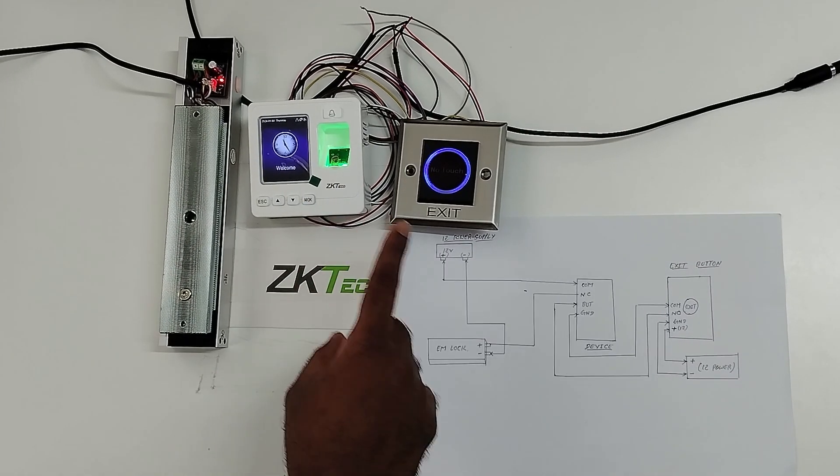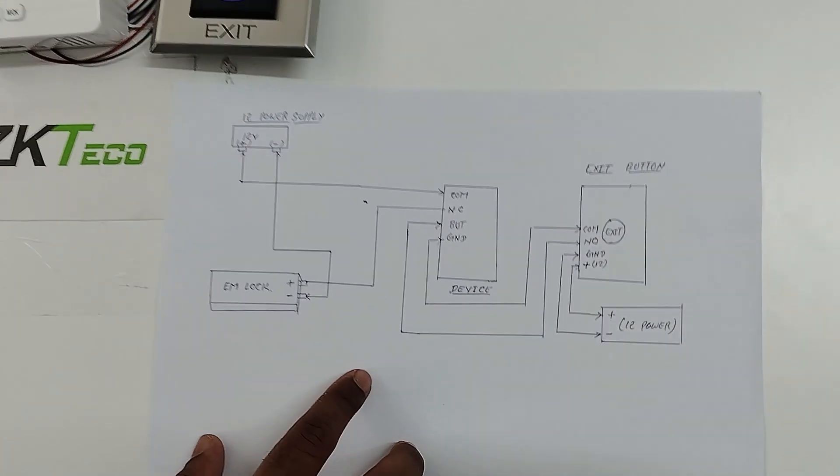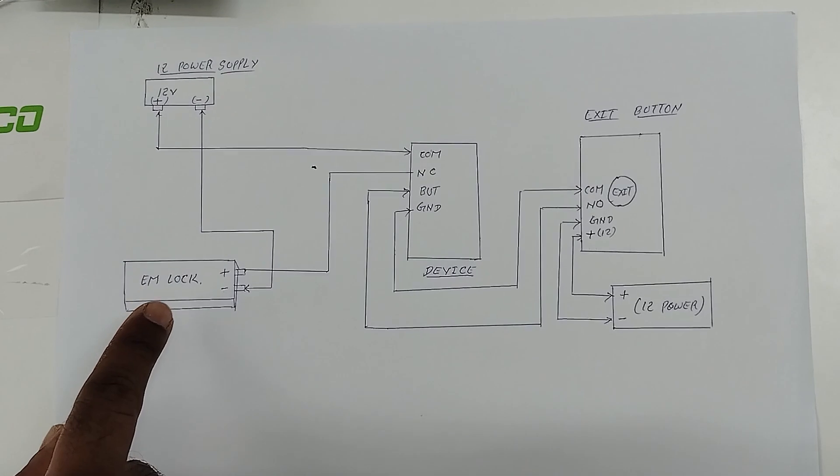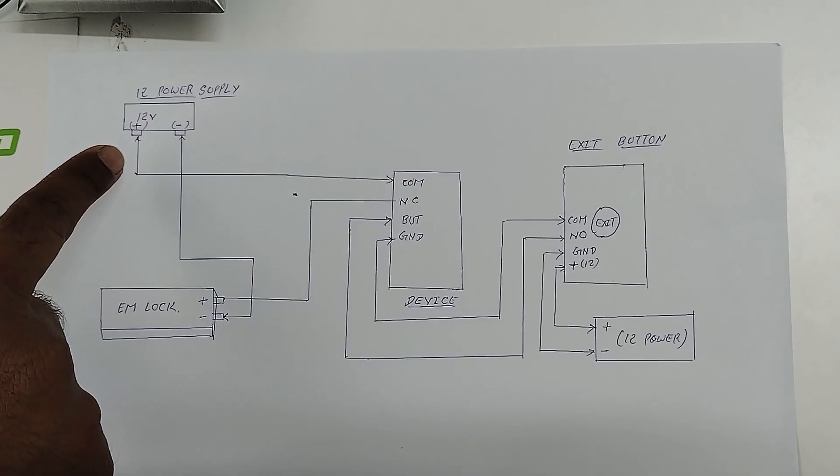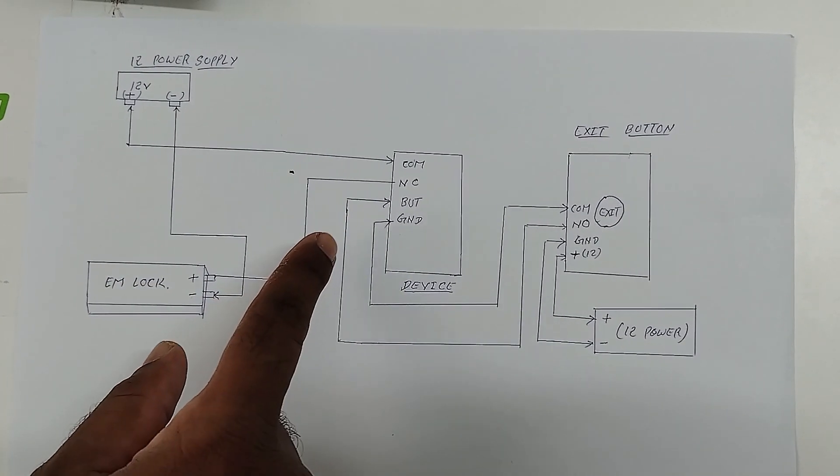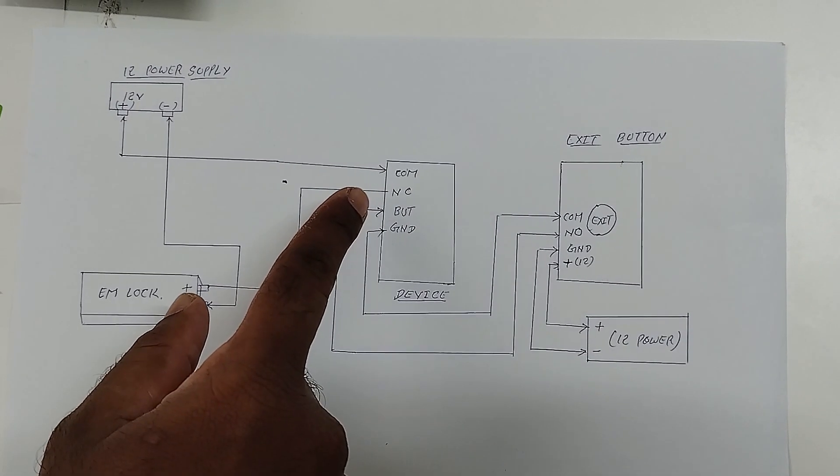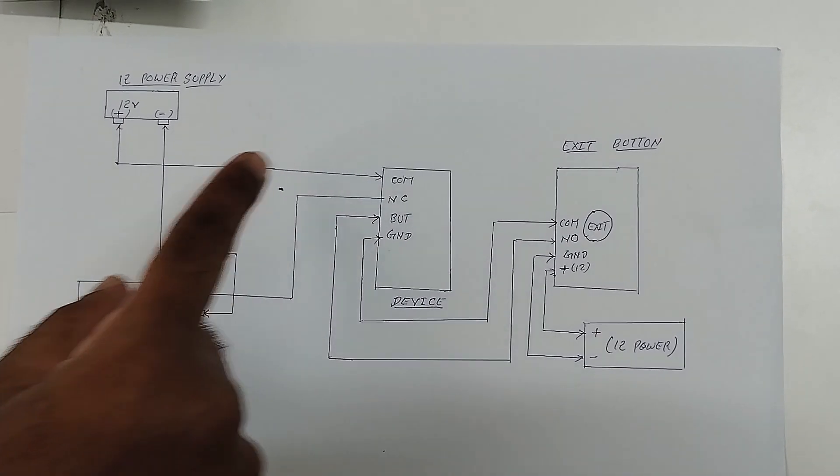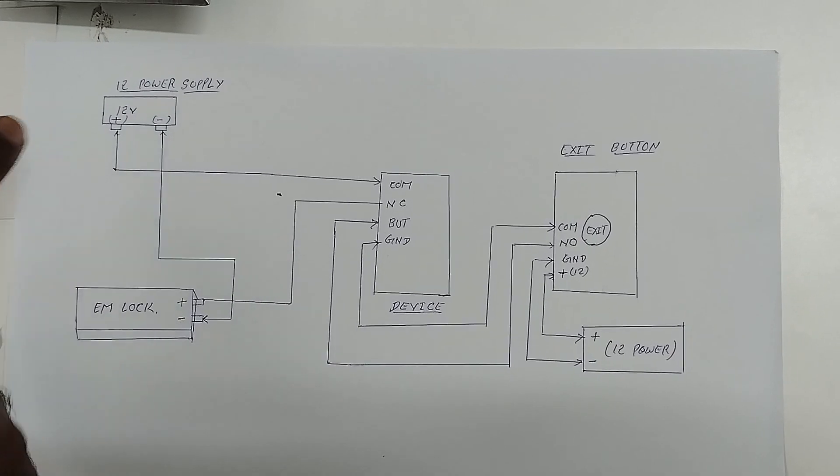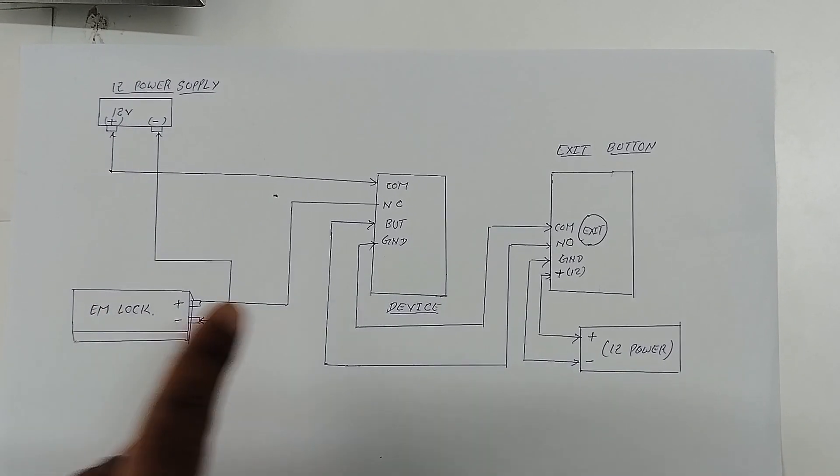Now I am going to explain how to do the connection. From the ZKTQ EM lock, negative should be connected with 12V power supply negative and positive should be connected with SF100 device NC. From the device comm should be connected with 12V power supply positive. This is how we will connect the EM lock with SF100 device.